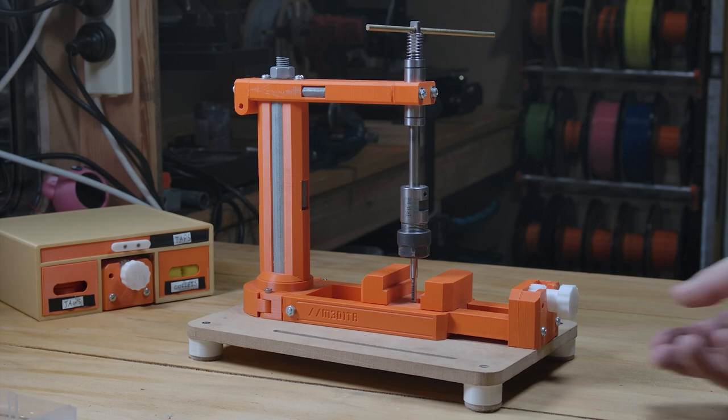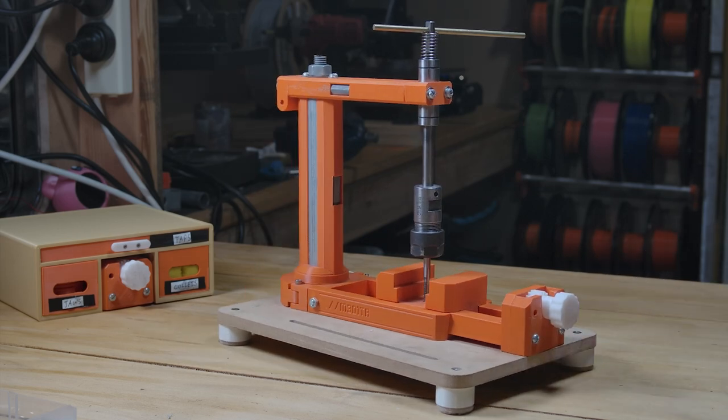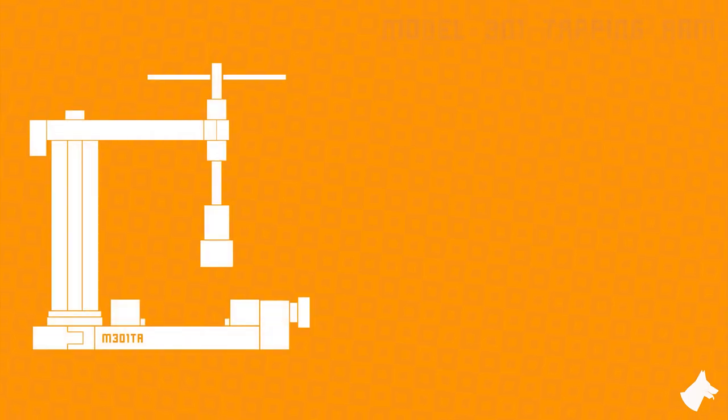And that leaves us with the completed project. This will be number one in what I'm calling the 300 series of 3D printed tools, essentially a way for me to designate my best work. The Model 301 tapping arm is my answer to quick, straight threads for small parts.